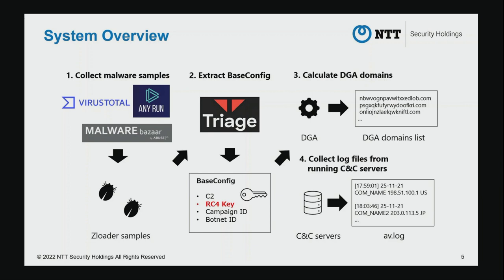From here, we are going to explain about our system. This is our system's overview. First, collect malware samples from the sample sharing sites shown here. Next, extract the base config using the online sandbox service. Then, calculate the DGA domains using the RC4 key from the extracted base config. And finally, collect the log from running C2 servers.